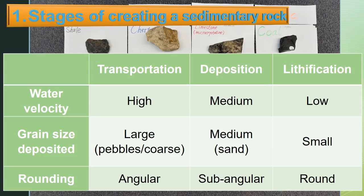With this process, water velocity changes from high to medium to low — decreasing — and the grain size deposited changes from large (pebbles), to coarse, to medium, to small. So grain size is decreasing, and the degree of rounding is increasing. Particles change from angular to subangular to rounded.